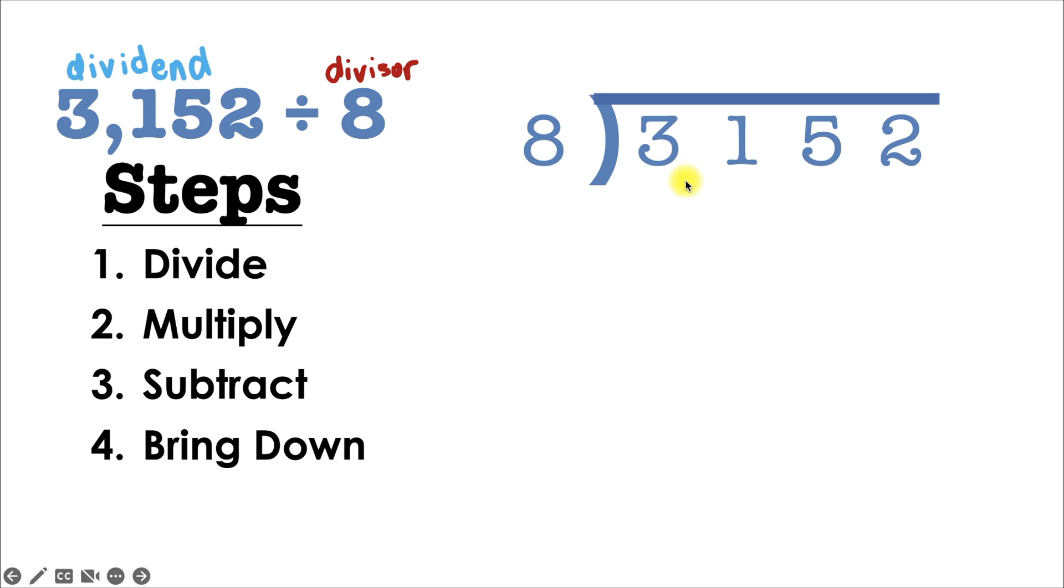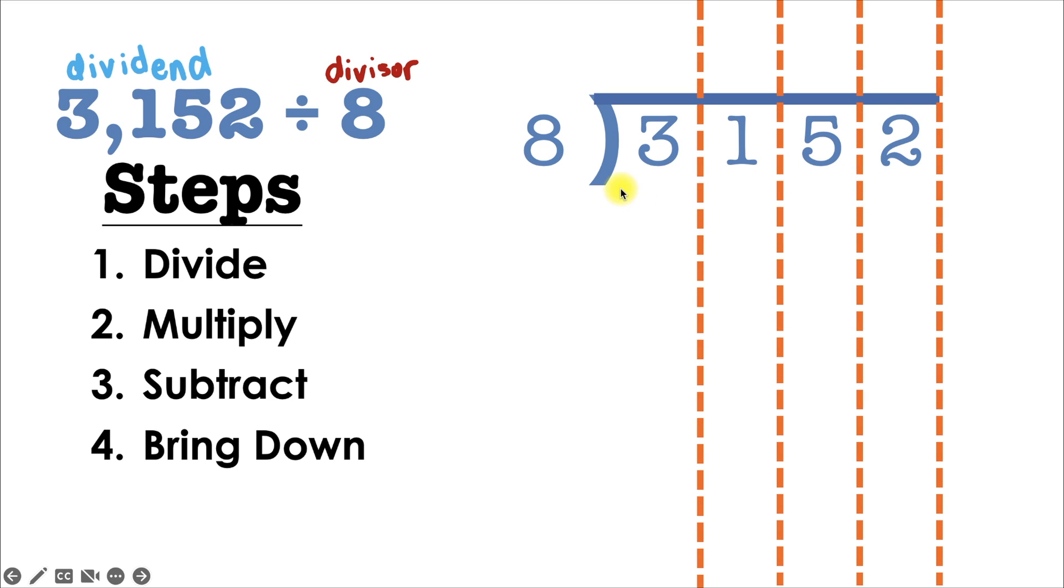And this means that our divisor 8 has to be outside this long division notation. And what I like to do is make sure that we split up our columns. This is to make sure that we're dividing the right values that we need to. Now, let's get started.